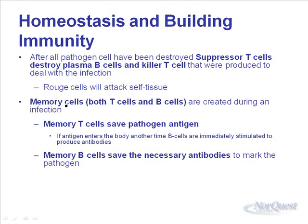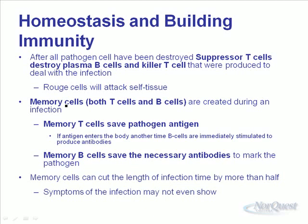Cells left behind are memory cells — T memory cells and B memory cells created during the infection. The memory T cells save the antigen, so if that antigen enters our body again, they can immediately activate B cells to produce antibodies. The memory B cells save the necessary antibodies required to mark the foreign pathogen if it should ever return. Memory cells can cut the length of infection time by more than half, and symptoms of that infection may not even show up.